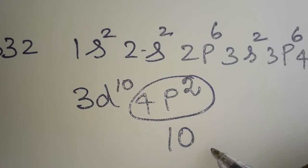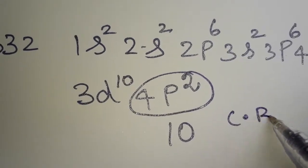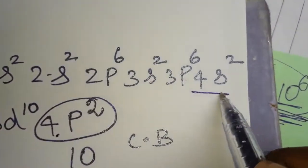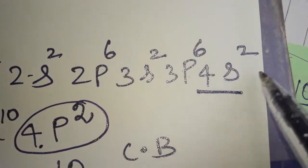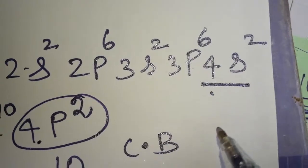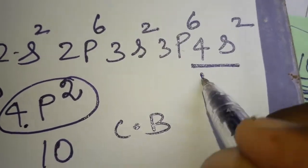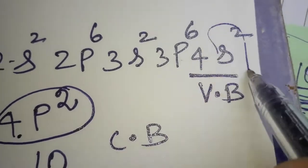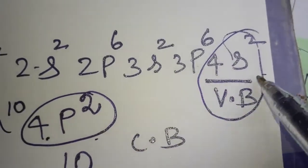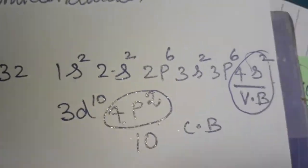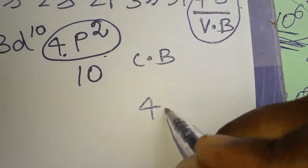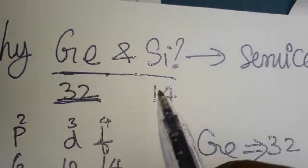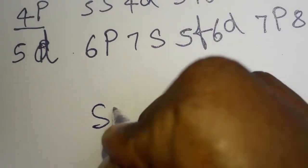Since p requires 6 electrons but only has 2, there are not enough electrons in that orbit — this becomes the conduction band with 2 electrons. The valence band is 4s², also with 2 electrons. So the conduction band has 2 electrons and the valence band has 2 electrons — the outermost orbit has a total of 4 electrons. That is germanium.